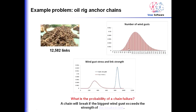Here's an example model. We've got an oil rig with 12,582 links in chains that anchor the rig to the ocean floor. We have the number of wind gusts that might occur and two distributions: the strength of an individual link and the stress of an individual gust. If any one of those — perhaps 209 or 220 different wind gusts — is larger than the weakest of those 12,582 links, then the chain will break. It's a very interesting problem to look at the probability of that chain breaking.